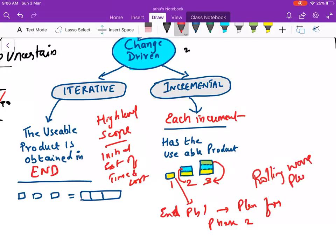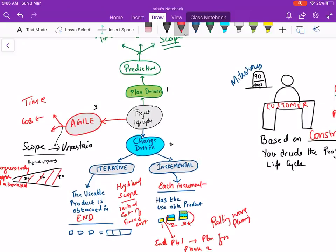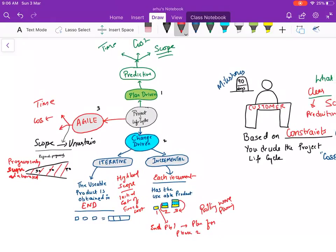So friends, this is a small video on understanding the concepts for your project life cycle. A very important factor is your constraint. Scope plays a vital role in predictive life cycle. Time, cost and scope is fixed and very clear in predictive. In change driven you've got two types: iterative and incremental. Usable product got at the end in iterative, each increment gives you a usable product in incremental. In Agile the scope is uncertain but time and cost is fixed. Scope is progressively elaborated and that's called as progressive elaboration. Incremental life cycle can be called as rolling wave planning in which at the end of first phase you plan for the next phase.